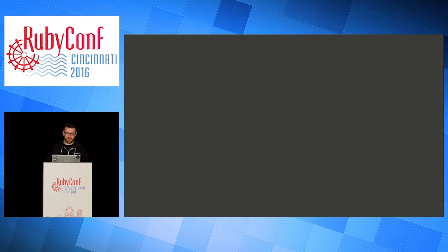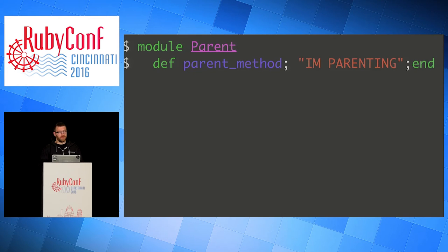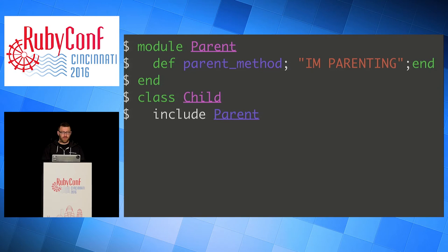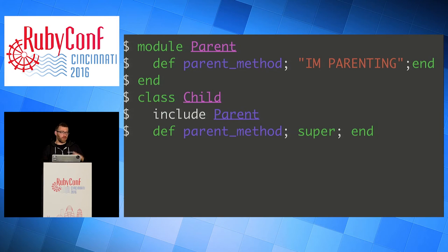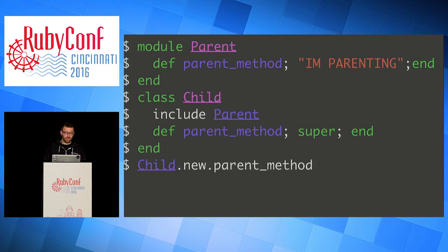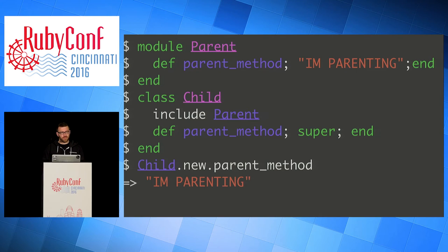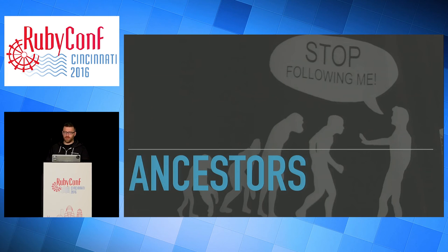We have a parent with a parent method that says 'I'm parenting.' We have a child that includes the parent, and we'll define that parent method again and call super. Because it's inheritance, it will call whatever my superclass's version of that method is. We create a new child and call parent_method — and we'll see 'I'm parenting.' So to explore that a little more, we'll get into ancestors.